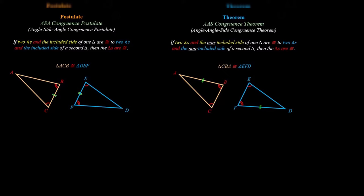The last one is a theorem, which means we must be able to prove it. This is the angle-angle-side congruence theorem. If two angles and the non-included side of one triangle are congruent to two angles and the non-included side of a second triangle, then the triangles are congruent. The only difference from angle-side-angle is that the side here is not included — it's not between the two angles.